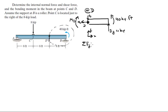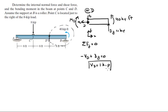Sum of the forces in Y equals 0, so shear plus BY equals 0, meaning the shear at D is the same as at C — 1 kip. Sum of the forces in X equals 0, and the only force in X is the normal, so the normal equals 0.